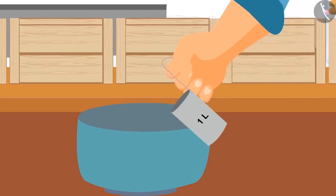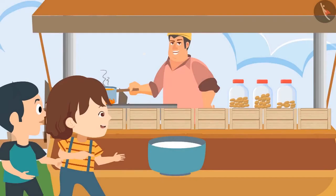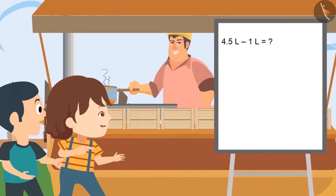Let me pour milk into this. Daddy, how much milk have you used for making tea? Son, I have used 1 liter of milk. Now tell me: if I have used 1 liter of milk out of 4 and a half liters, then how much milk is left? After taking out 1 liter, we are left with 3.5 liters of milk. Very good, Pinky.